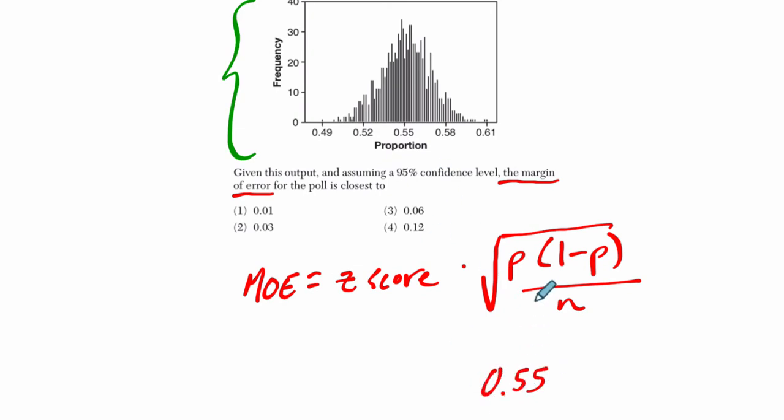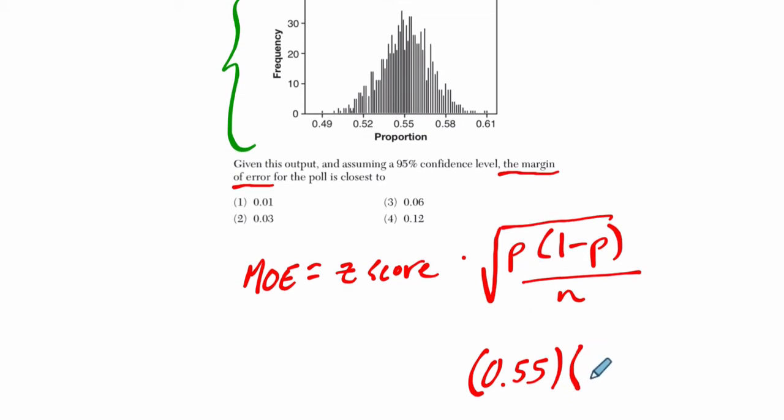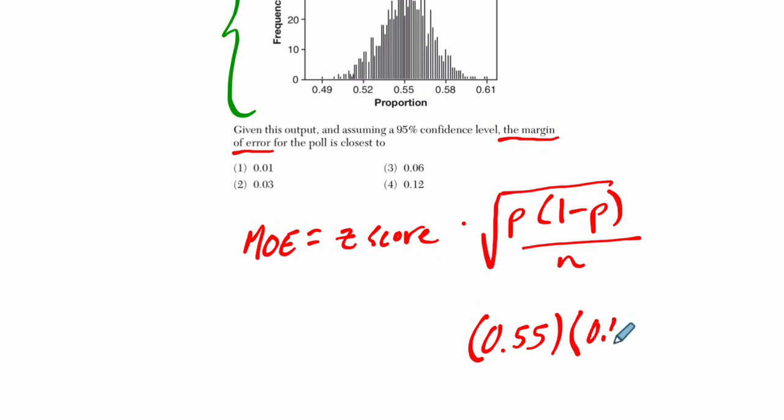This is a binomial situation—you're either going to vote for the candidate or not. So the other case is 1 minus p. If you vote for them, it's a 55% chance. So there's 1 minus 55%, or 0.45, chance that you will not vote for them. You're dividing that by the number of cases, which is 900, the sample size of each of the experiments. Then taking the square root of that and multiplying by the z-score.